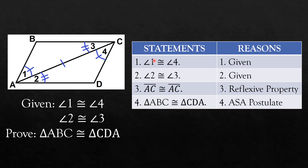Because we already have three parts — two angles and one side — we have triangle ABC congruent to triangle CDA by ASA postulate. Now that we are done with what to prove, we have already demonstrated that the geometrical statement was true. So we write QED at the rightmost corner of the bottom of the table.